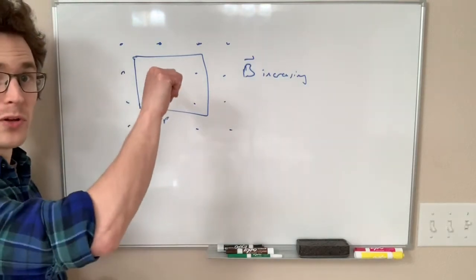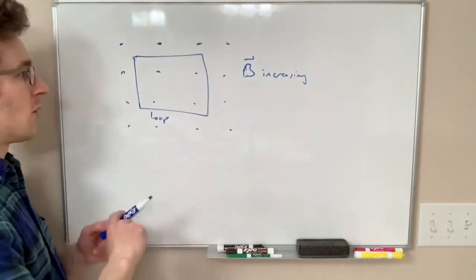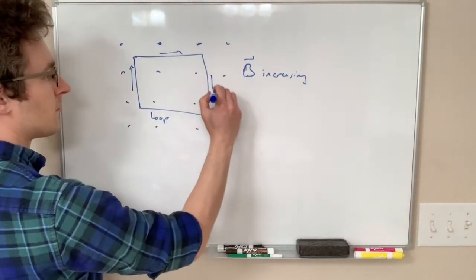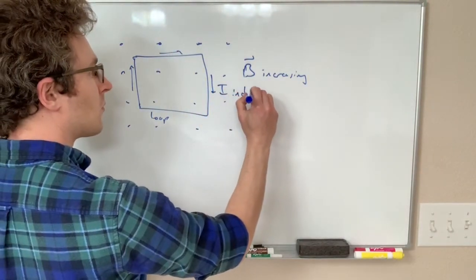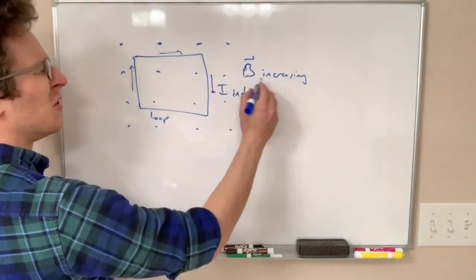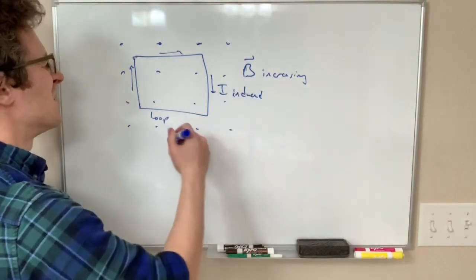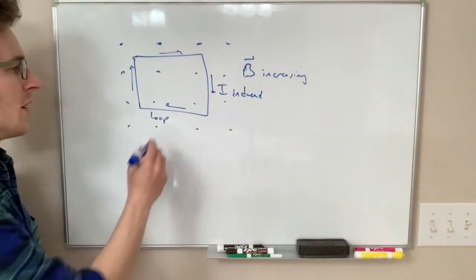so making a field into the board, which by the right-hand rule is going to be clockwise around the loop. So this changing B field causes this induced current to go clockwise around the loop.